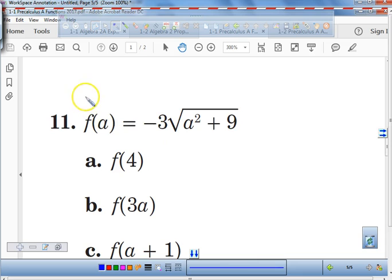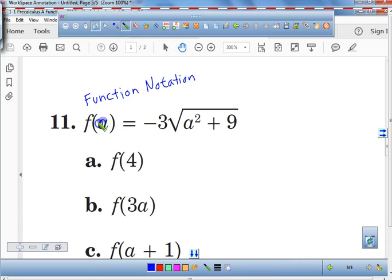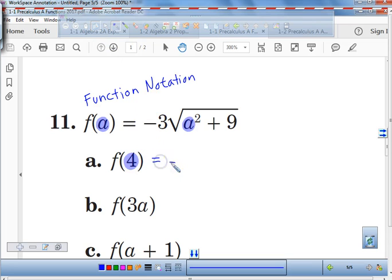That is correct, Sheila. This is definitely function notation. All right, so it says f of a is equal to this. There's my a. But what if it says f of 4? How would we evaluate this function? What am I going to put in the place of the a this time, Madison?